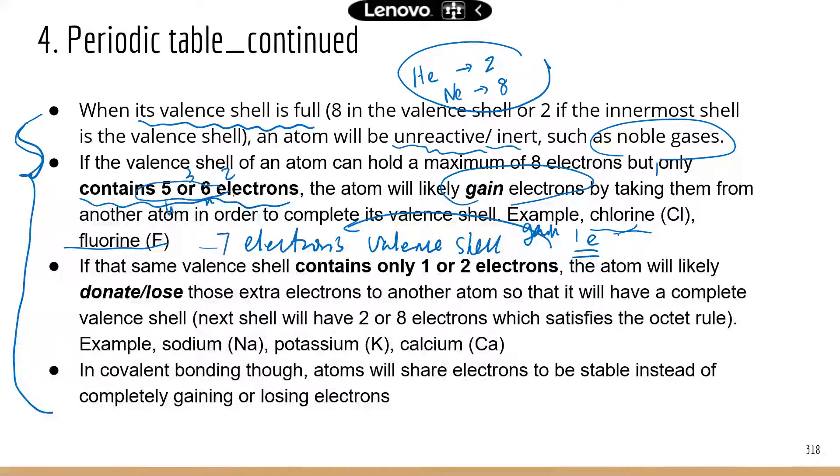On the other hand, if an atom has only one or two electrons in the valence shell, it will tend to donate or lose that electron. We talked about potassium earlier. Potassium has just one electron in the valence shell, so it's easier to just donate that electron to somebody else. Then you go down to the next shell which now becomes the valence shell, and that shell has eight electrons already, so now you are stable.